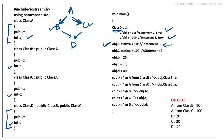Similarly, other values can also be accessed using scope resolution: obj.B::a and obj.C::c. After execution of this program, it will display the output: A from class B = 10, A from class C = 100, B = 20, C = 30, and D = 40. So the ambiguity is removed by using the scope resolution operator with the class name.